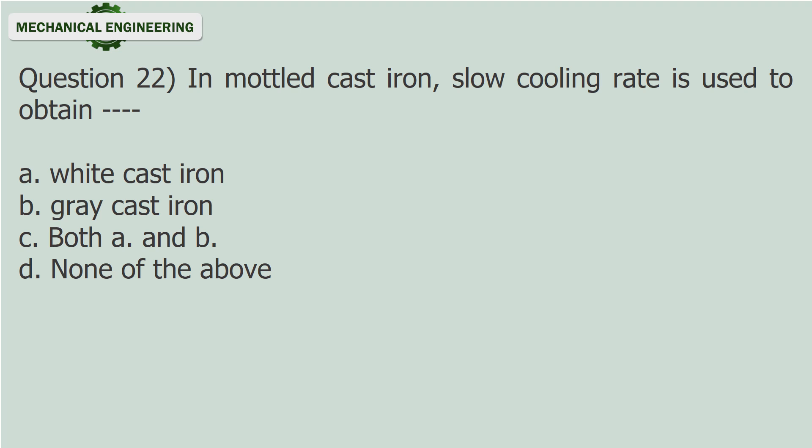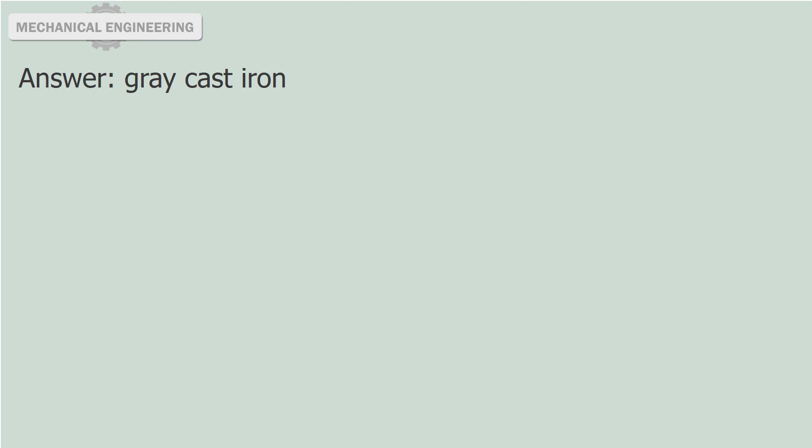Question 22: In mottled cast iron, slow cooling rate is used to obtain — (fill in the blank). A. White cast iron. B. Gray cast iron. C. Both A and B. D. None of the above. Answer: Gray cast iron.